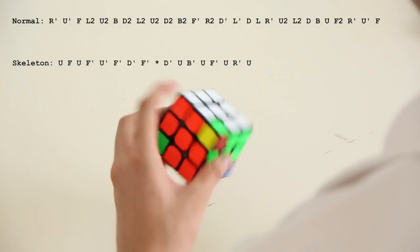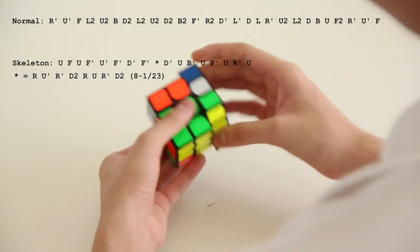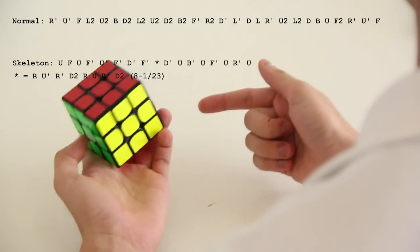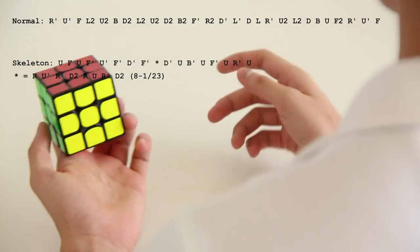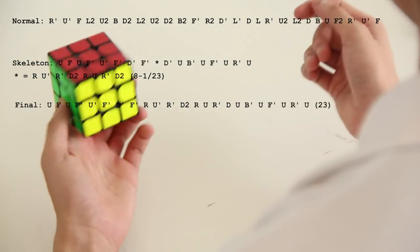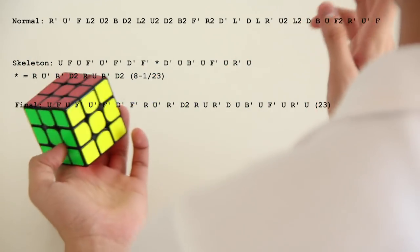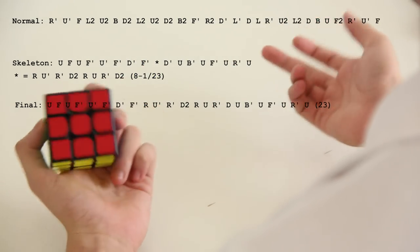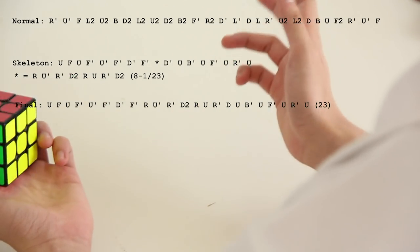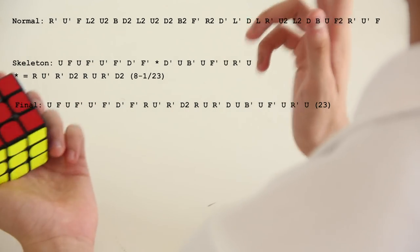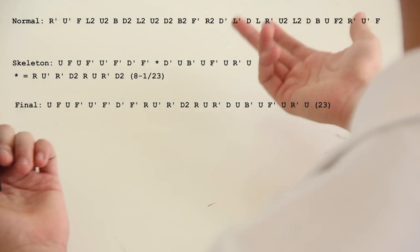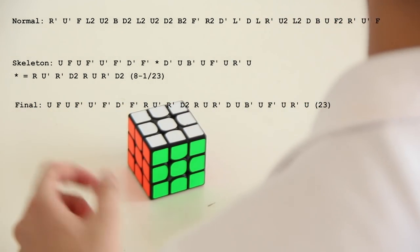So my insertion was at this point, which is R, U', R', D2, R, U, R', D2. Sadly, that only cancelled one, which gives me a final solution of 23 moves. I also tried some advanced 3C, which is basically inserting a random commutator somewhere that cancels a lot of moves but leaves 3C. I tried that and the best I could find was also a 23.